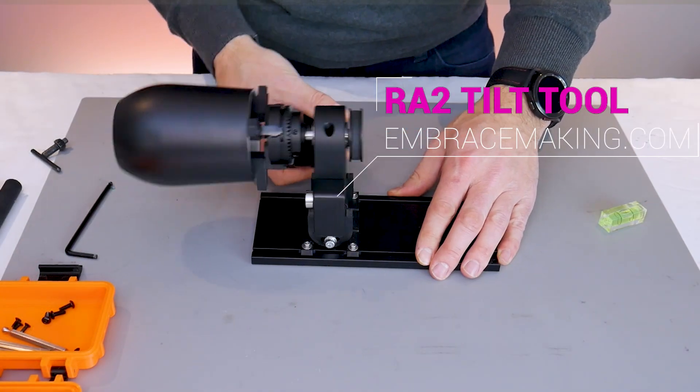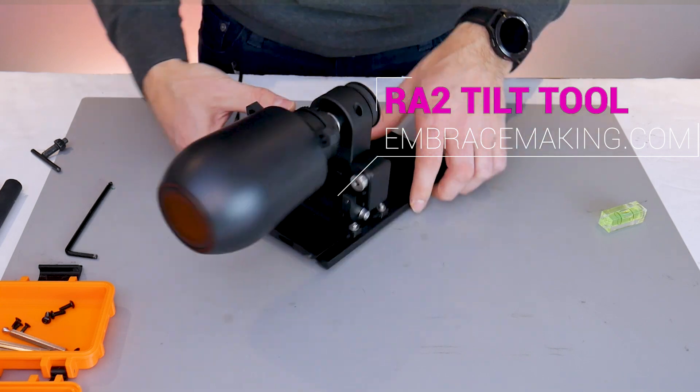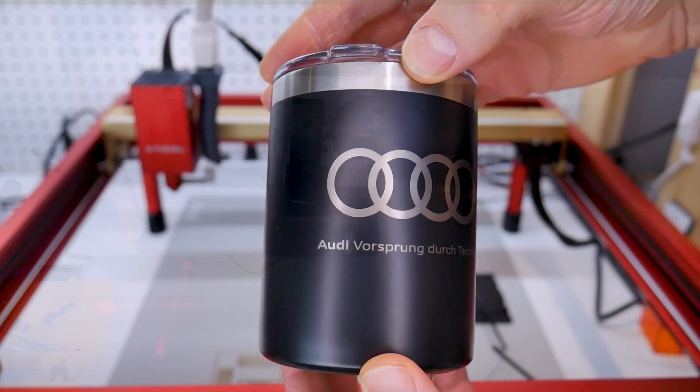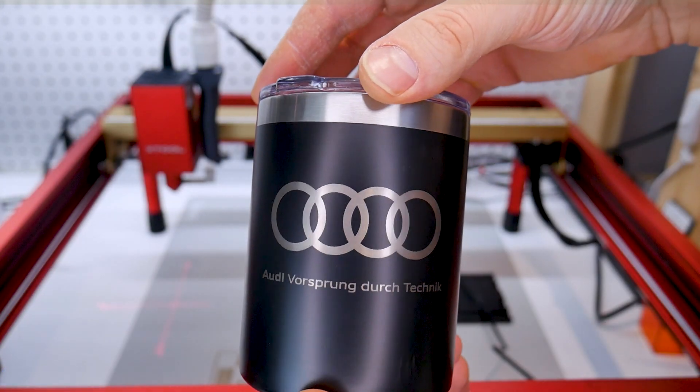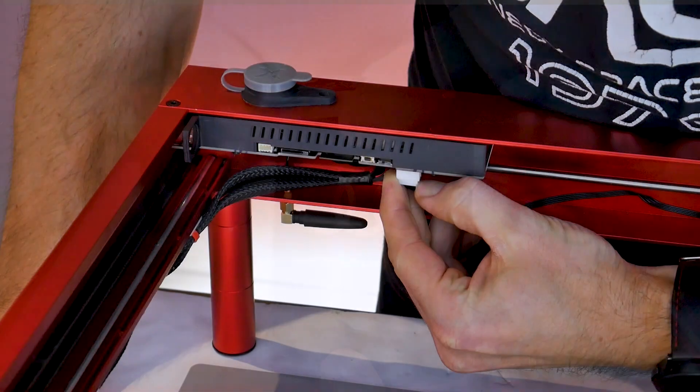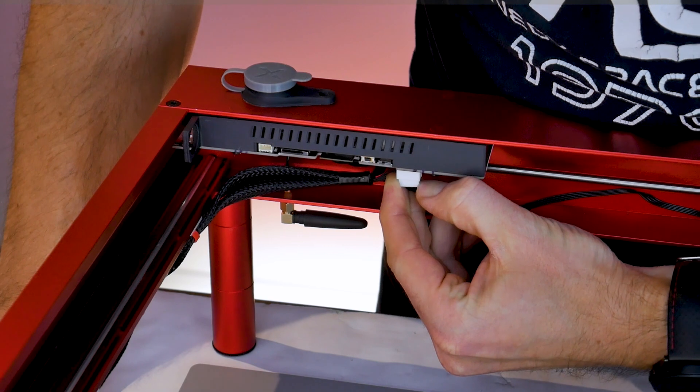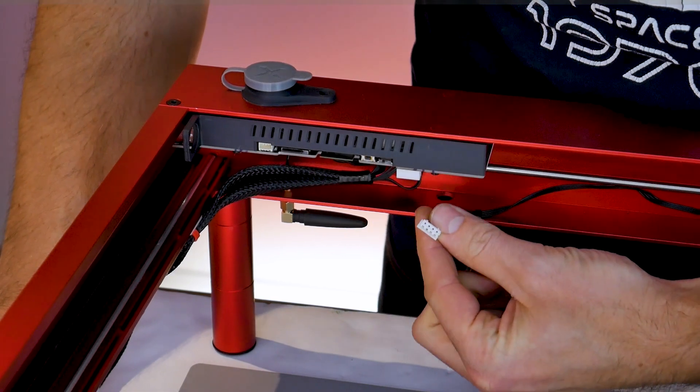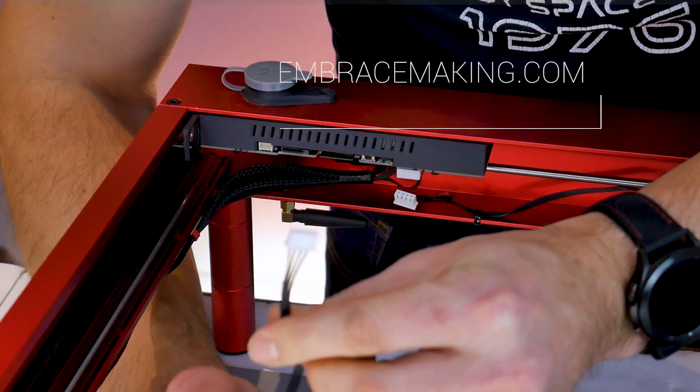The Xtool RA2 is one of the most versatile rotary attachments on the market right now in my opinion, but it still suffers from one very annoying problem that could lead to damage to your machine. This is the fact that every time you want to use it you have to unplug your Y motor from the main board and then plug in the rotary attachment.